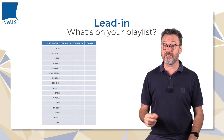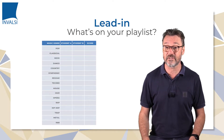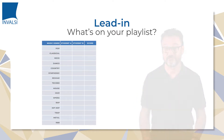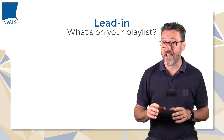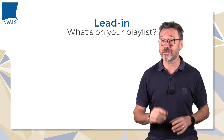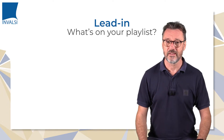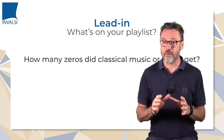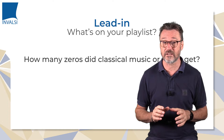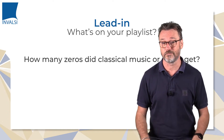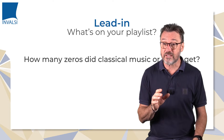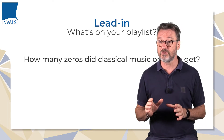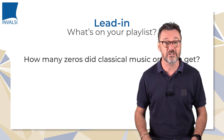You are going to find the instructions and the table necessary for the activity by clicking on the link below. At the end of the activity, we are going to ask a provocative question: how many have given zero to classical music, opera, or symphonic music? If our predictions are correct, a lot may have ranked those genres low. In order to understand the reasons why a large number of students don't like those genres, a discussion can follow.